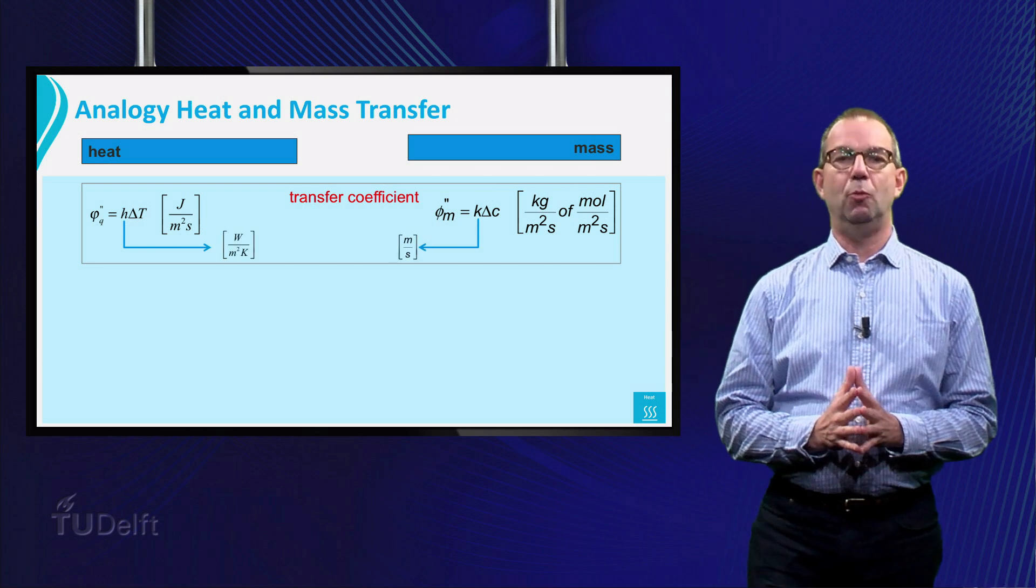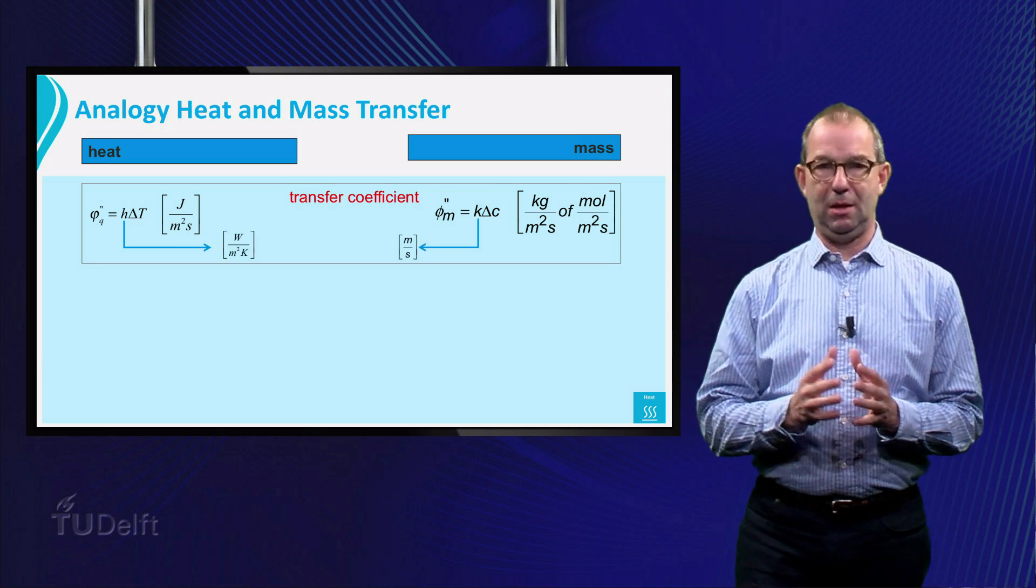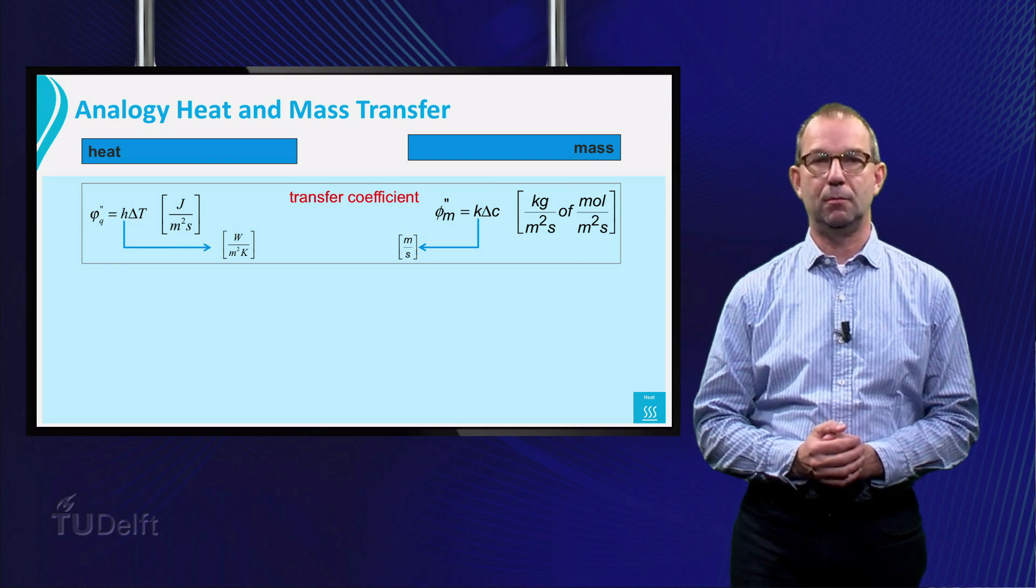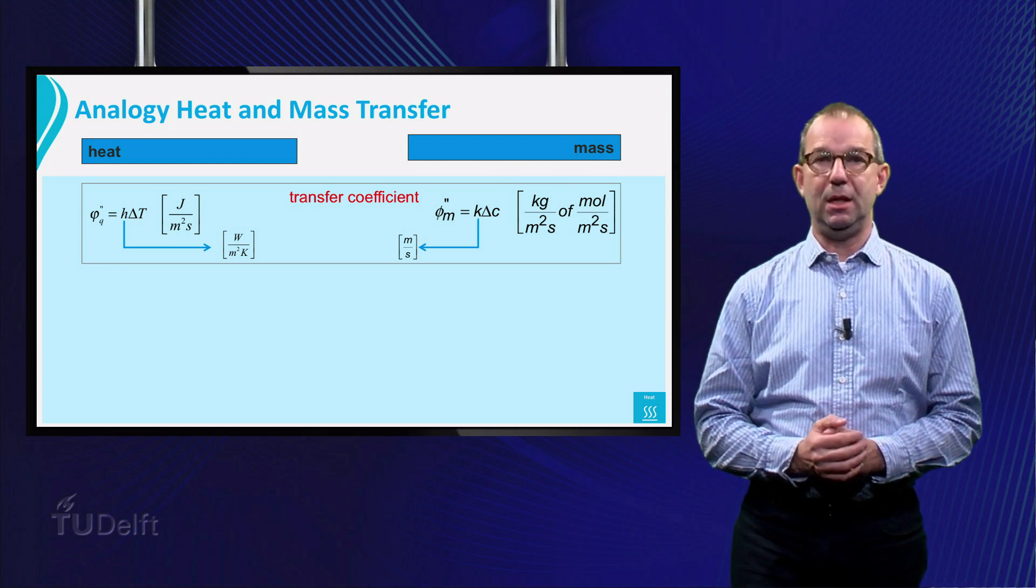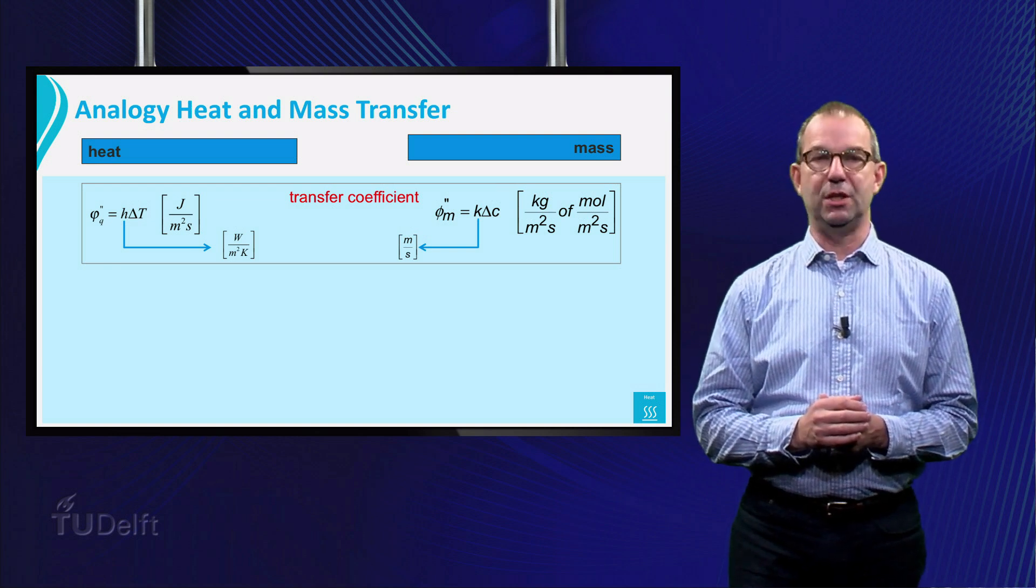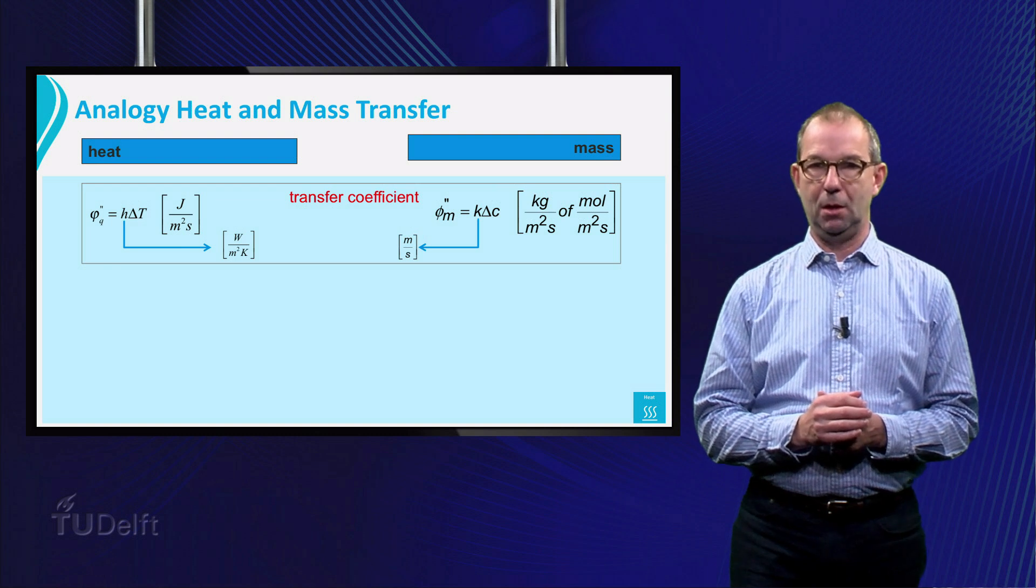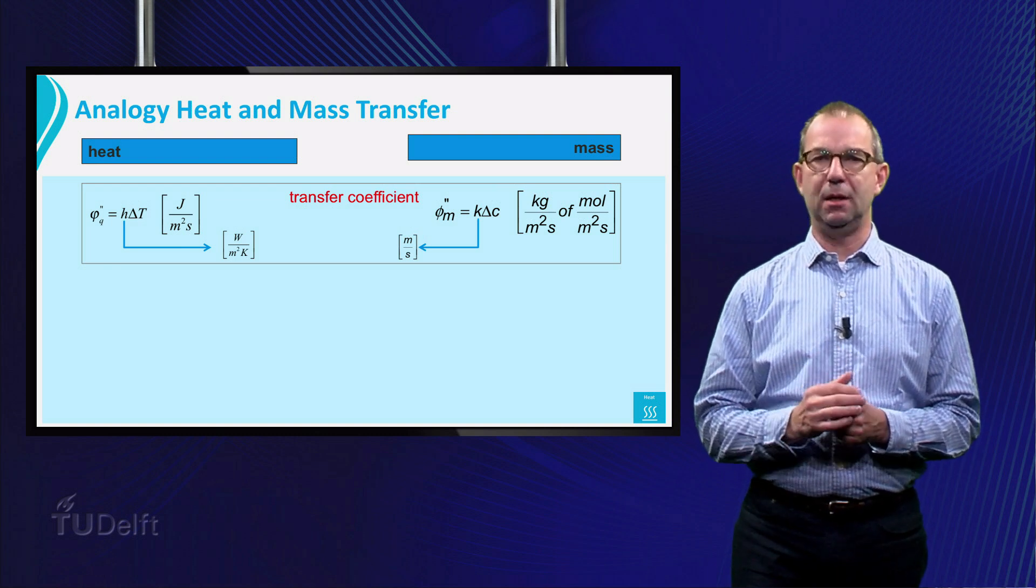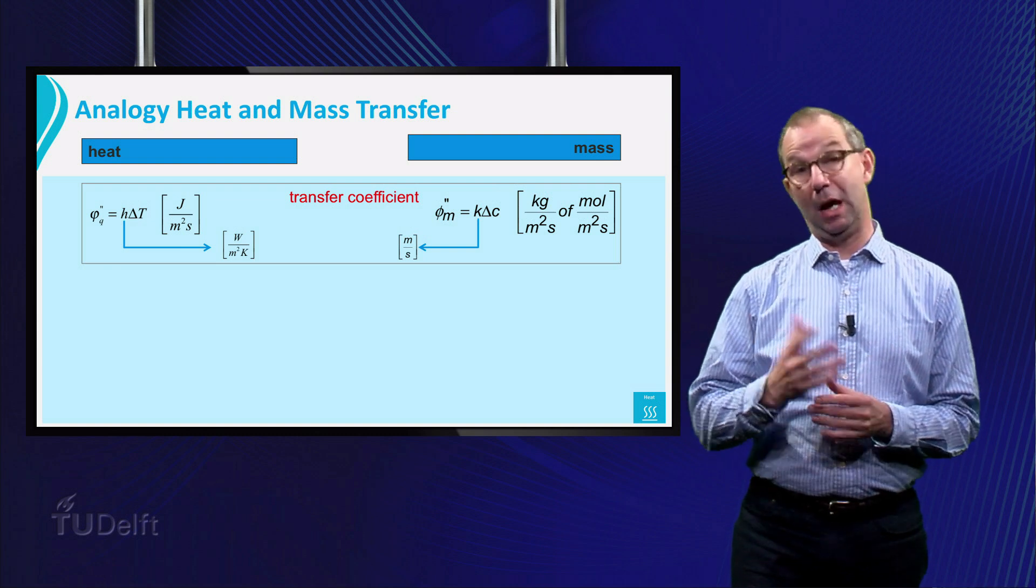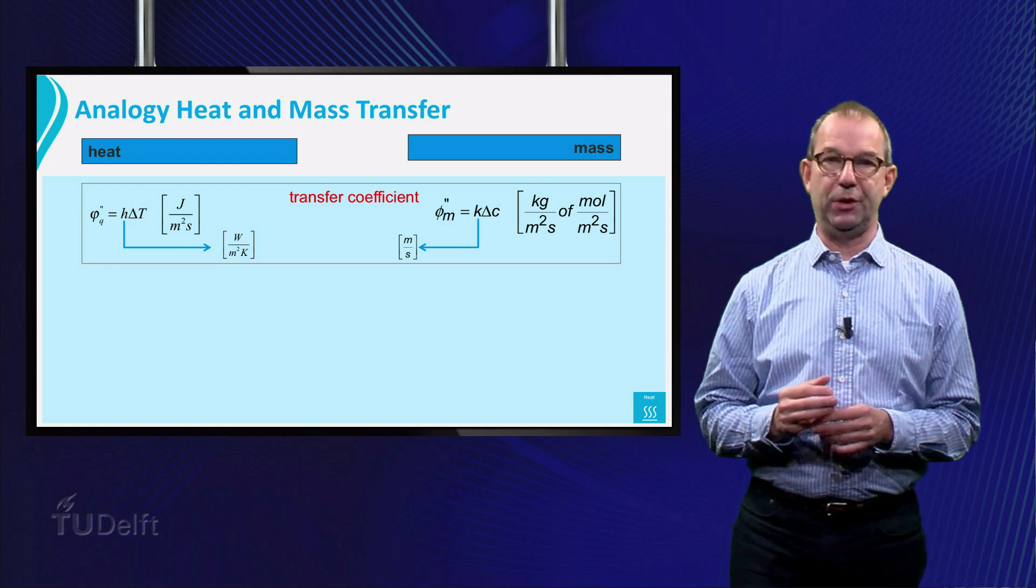In the general case, we use for both heat and mass transfer an equation like Newton's cooling law. It states that heat and mass will flow whenever a difference in temperature or concentration is present. For heat, we have as coupling the heat transfer coefficient h. And for mass, likewise, the mass transfer coefficient k.